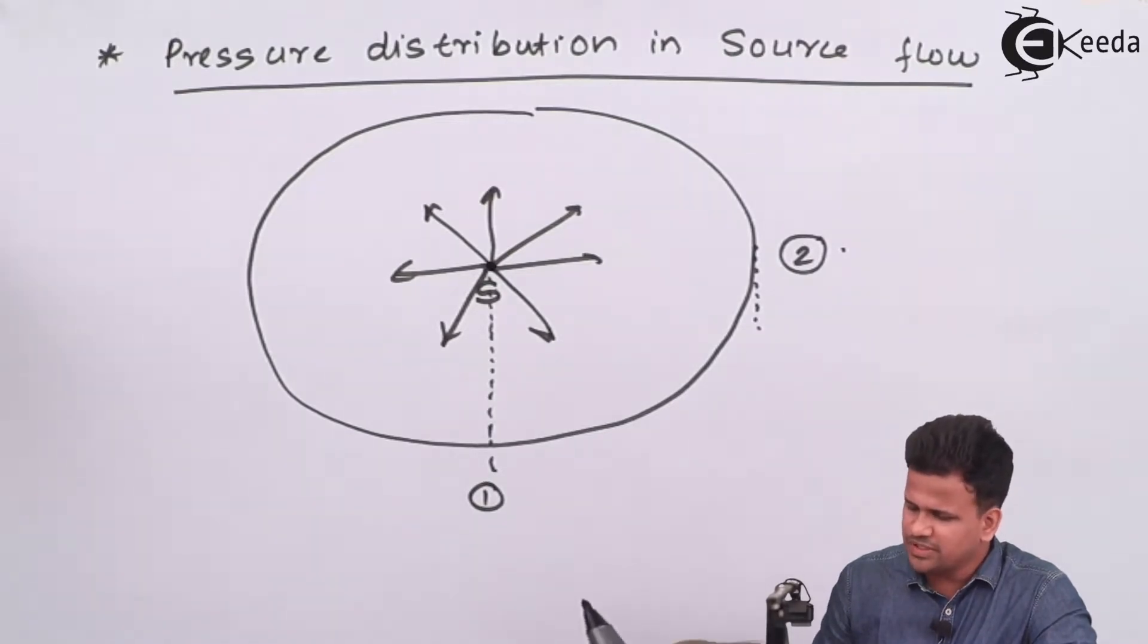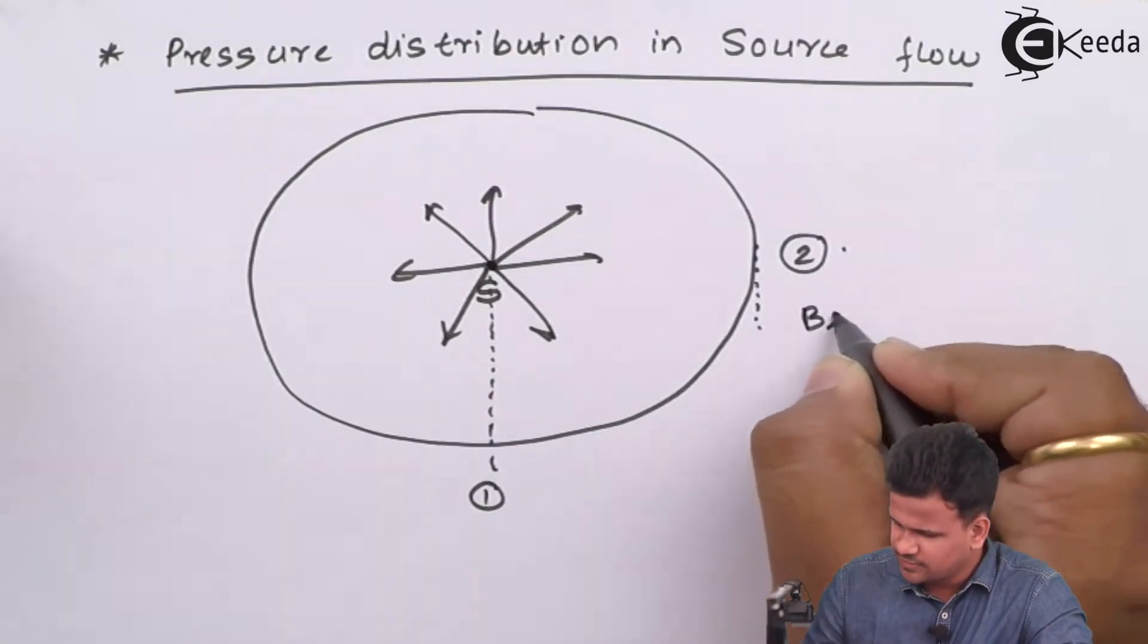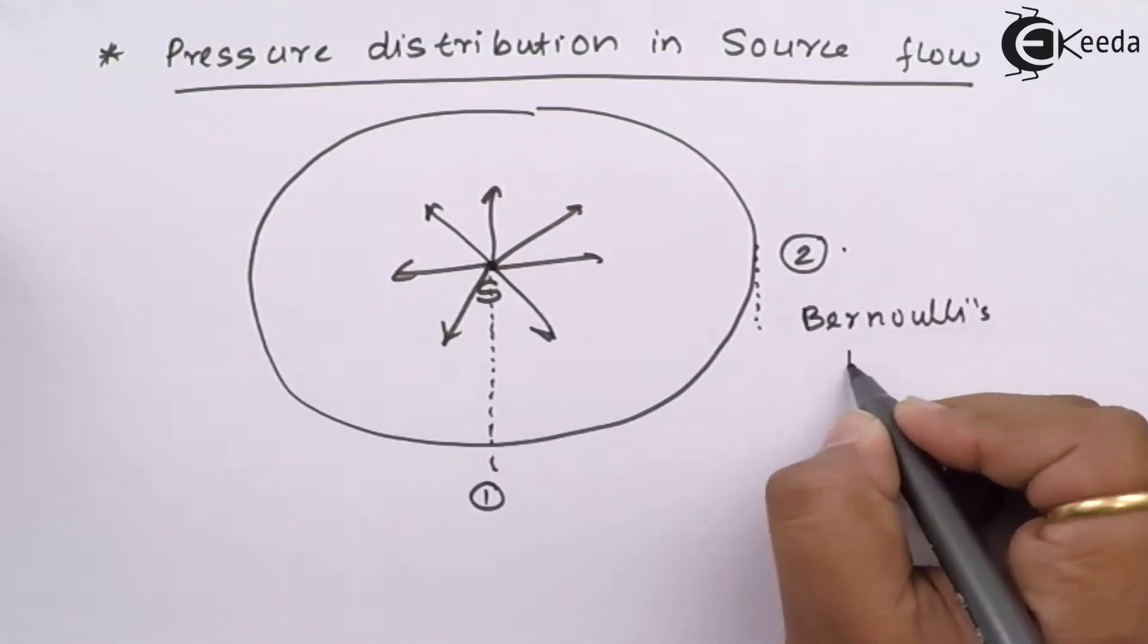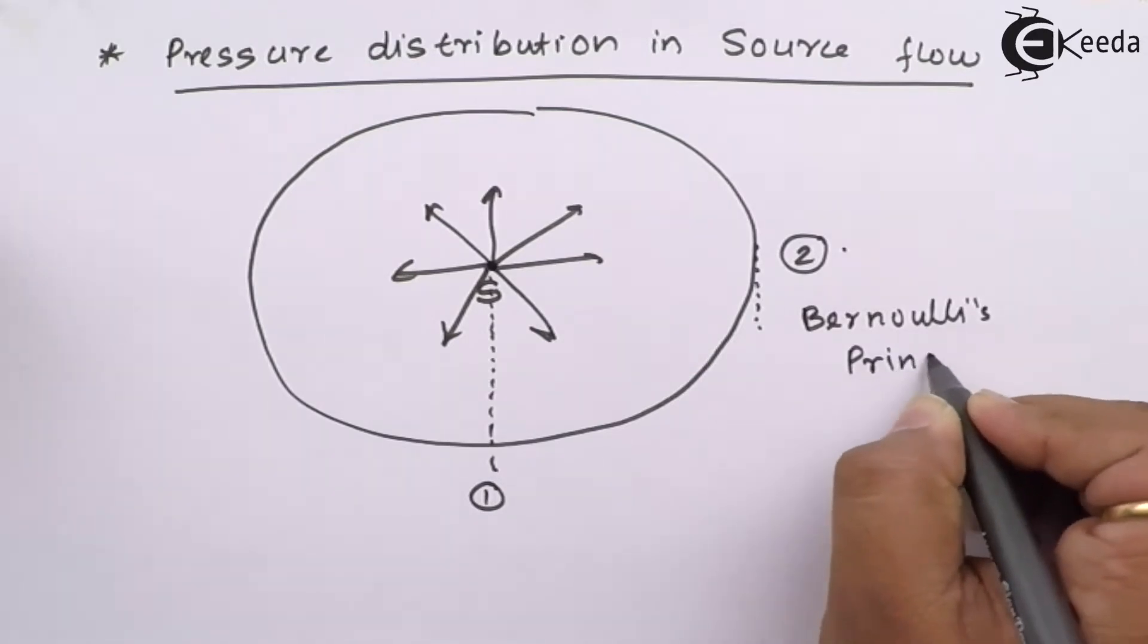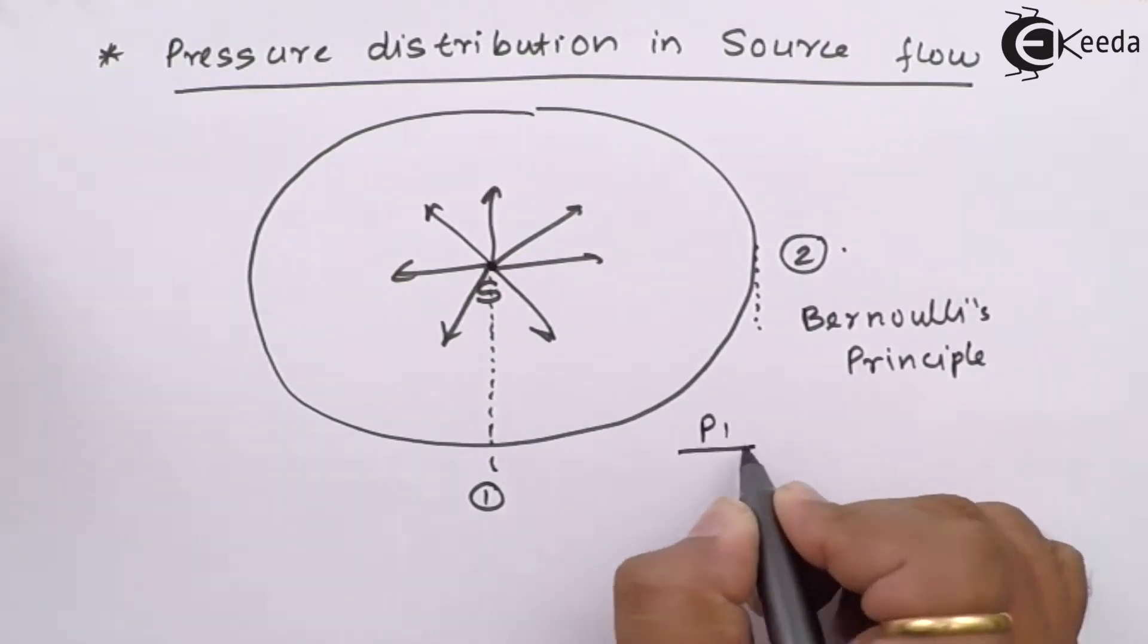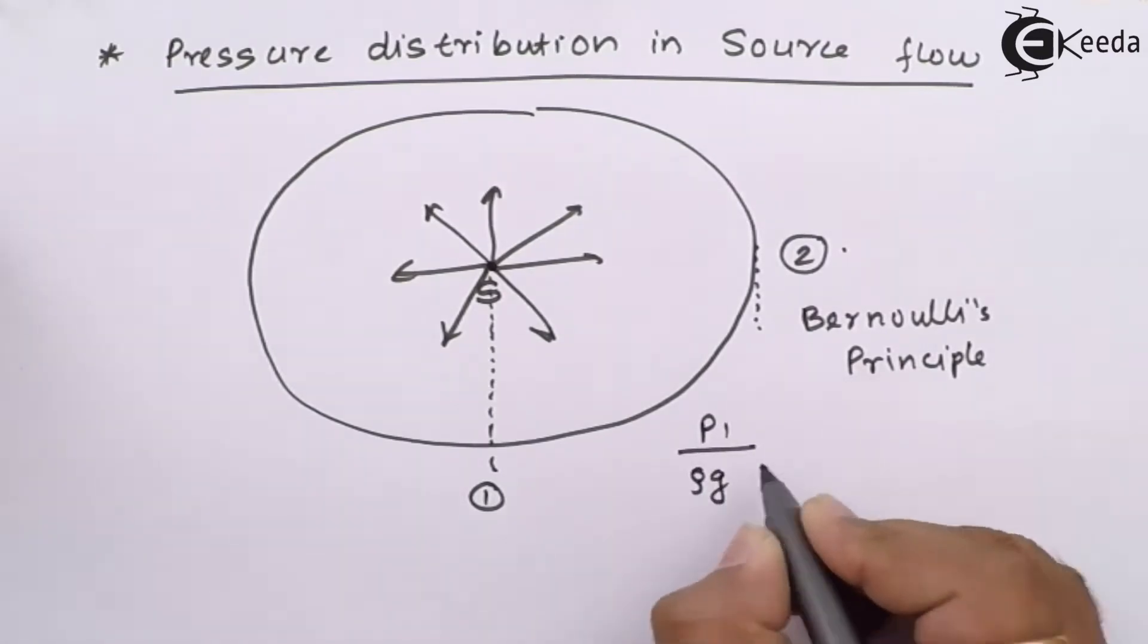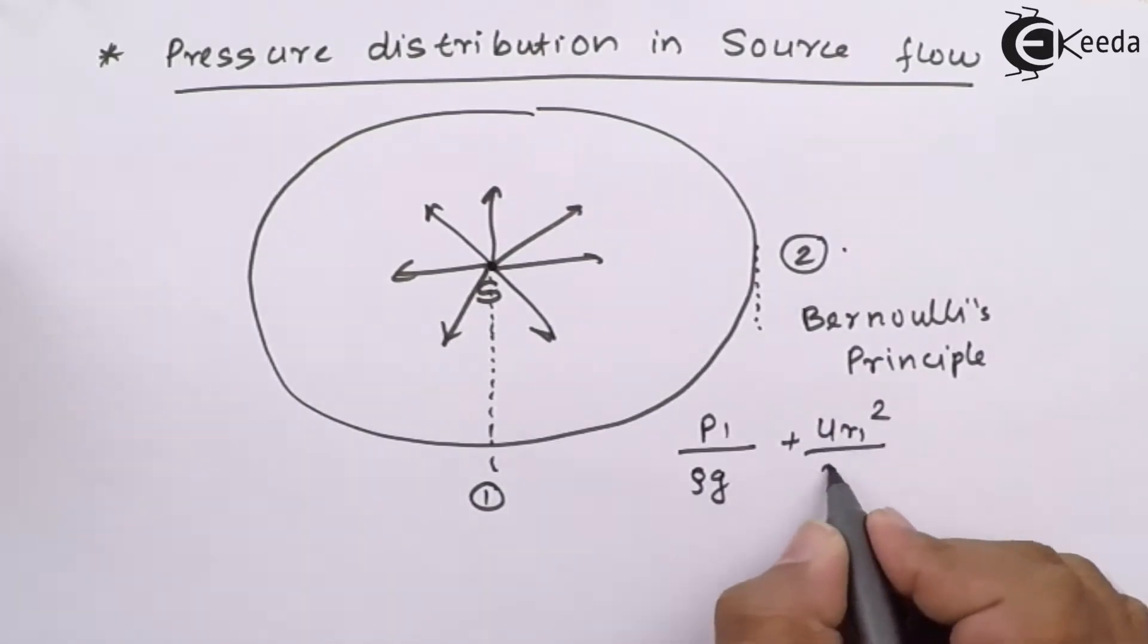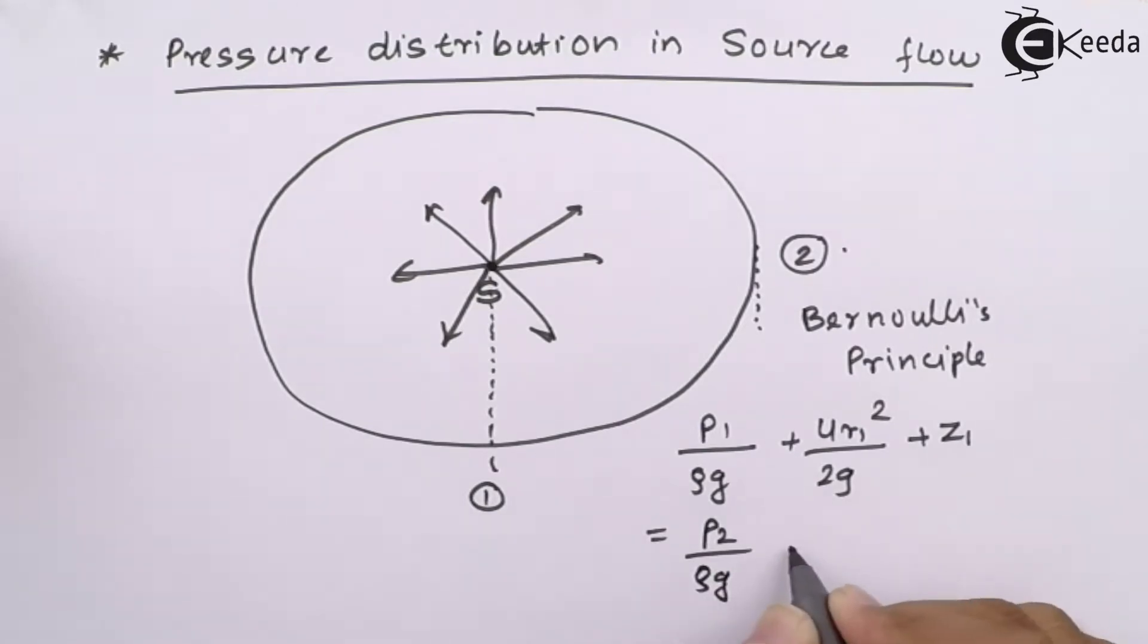Bernoulli's principle says that p1/(ρg) + ur1²/(2g) + z1 equals p2/(ρg) + ur²/(2) + z2.